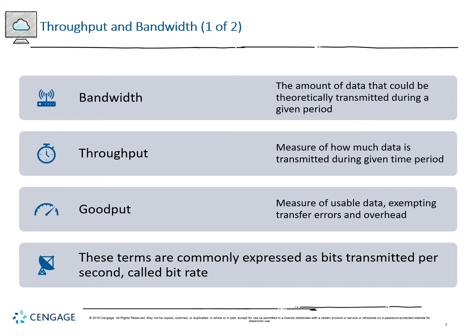To measure the data we actually can transmit — not theoretically but what we're actually getting — is what we call throughput. We can narrow that further into usable data, exempting transfer errors and overhead like the preamble of a frame, to get what we call goodput. That's what we can actually use at the other side. These terms are commonly expressed in bits per second, called the bit rate.